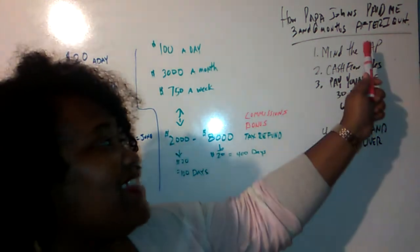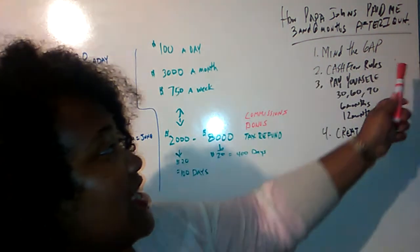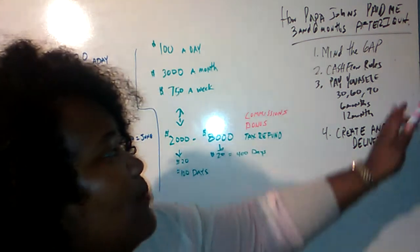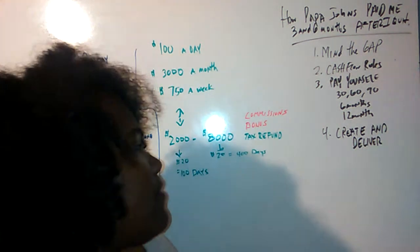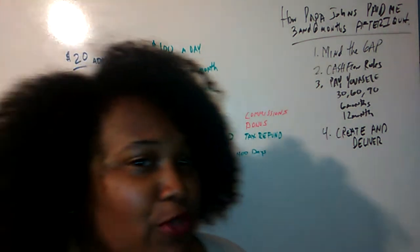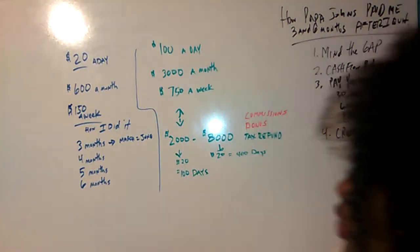To introduce the rules to play by: mind the gap, how much coming in, how much is going out, cash flow rules, pay yourself 30, 60, 90 days, six months and 12 months later, create and deliver. These are really great tips to live by.